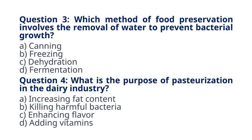Question 4. What is the purpose of pasteurization in the dairy industry? A. Increasing Fat Content B. Killing Harmful Bacteria C. Enhancing Flavor D. Adding Vitamins. The correct answer to question 4 is option B. Killing Harmful Bacteria. Explanation: pasteurization involves heating milk to kill harmful bacteria, improving its safety and shelf life.